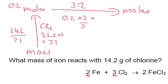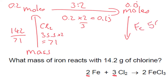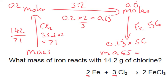So 0.13 recurring. Then finally, we're talking about iron — Fe — which has an atomic mass of 56 on the periodic table. So 0.13 recurring multiplied by 56, and we get our final mass of 7.47 grams.